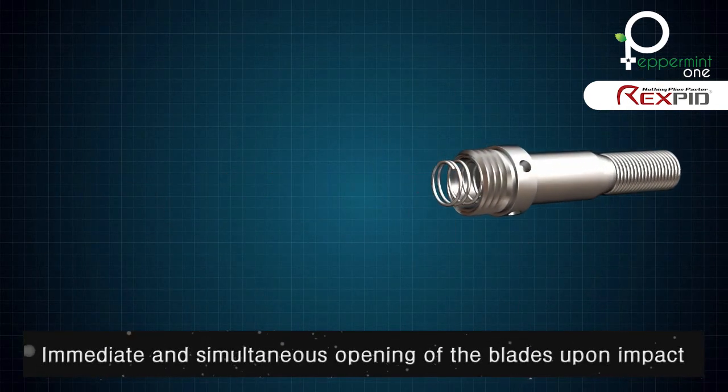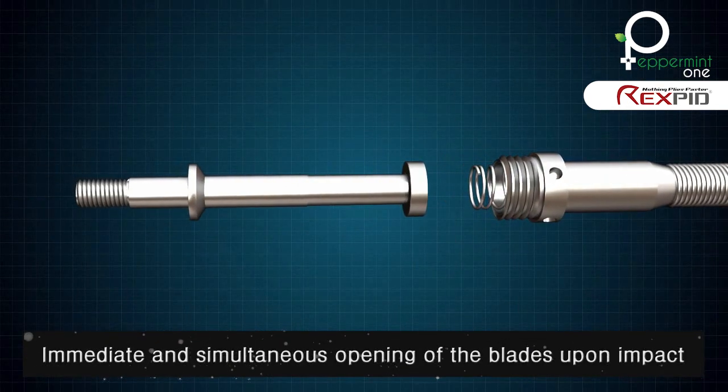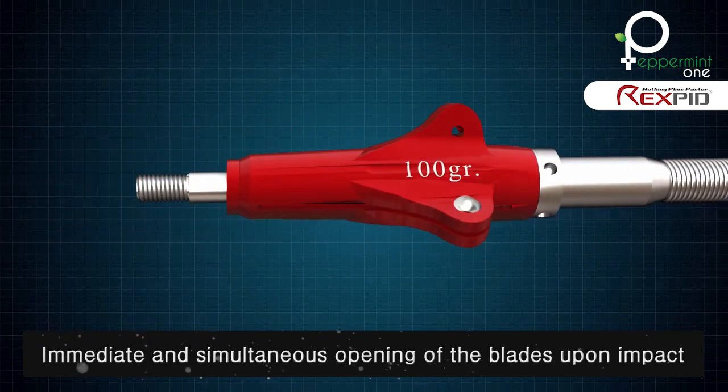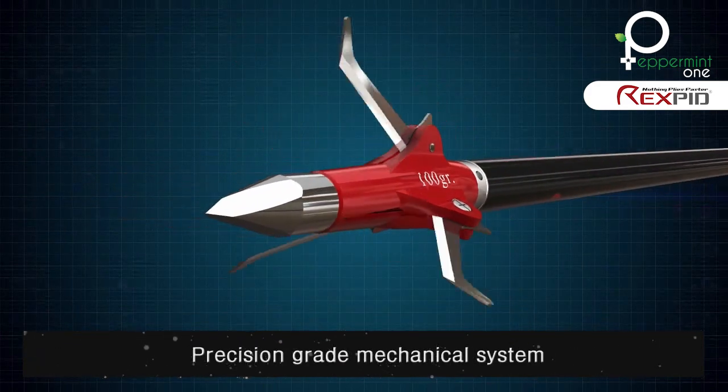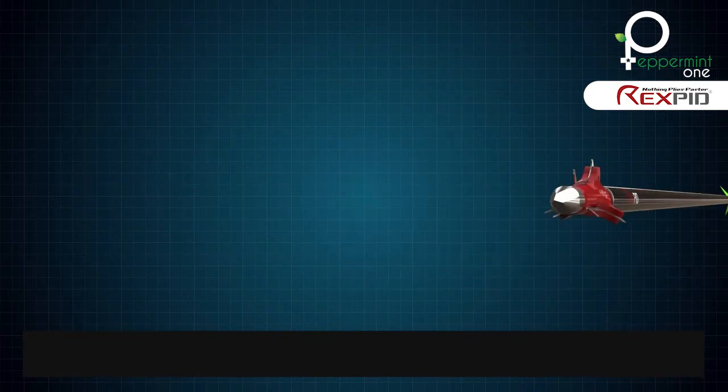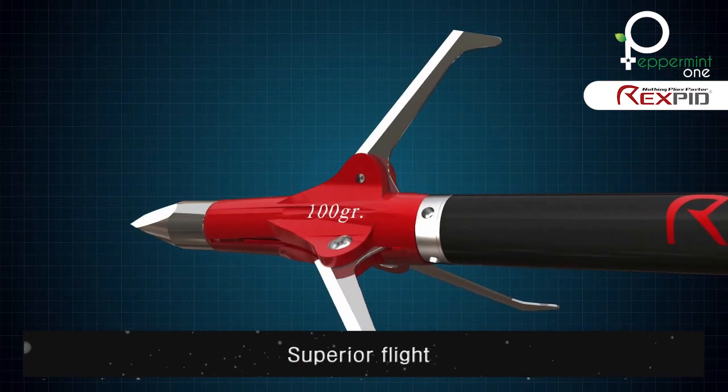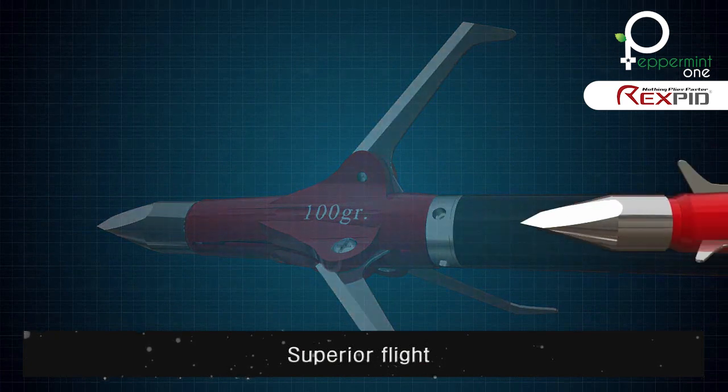Rexpid RXS will open all three blades upon tip impact. When the tip hits the animal, the force of impact will trigger the blades to swing open. Since the blades will open only on impact, it will ensure stability in flight.